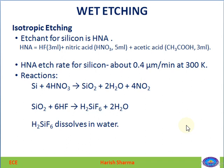The main etchant used for silicon in isotropic wet etching is HNA — a mixture of 3 ml HF (hydrofluoric acid), 5 ml nitric acid, and 3 ml acetic acid. The etch rate of HNA for silicon is about 0.4 micrometers per minute at 300 K. The reaction is: silicon first reacts with HNO3 to make SiO2, H2O, and NO2. This SiO2 then reacts with HF to make H2SiF6 and 2H2O. The H2SiF6 is soluble in water, so it dissolves and the silicon material is removed.